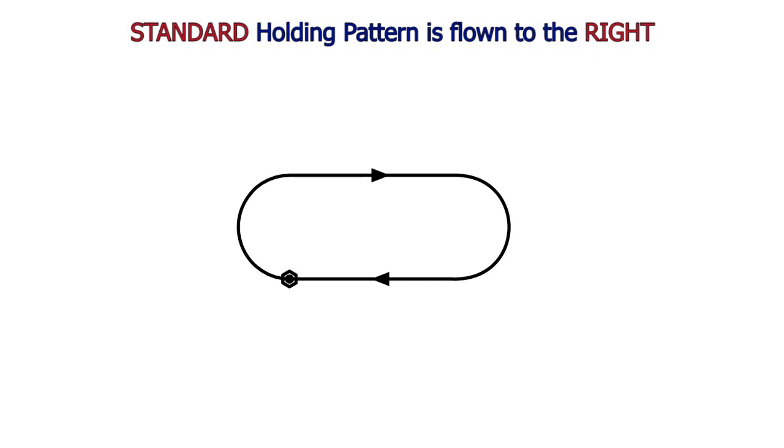Now what is a standard holding pattern? A standard holding pattern is always flown to the right. The holding pattern always has a fix. A fix can be any identifiable point, whether it's a VOR, an NDB, a GPS point. That point can also be on a radial from a VOR at a specified distance. It can be a triangulation point, so any identifiable point can be used as a fix.